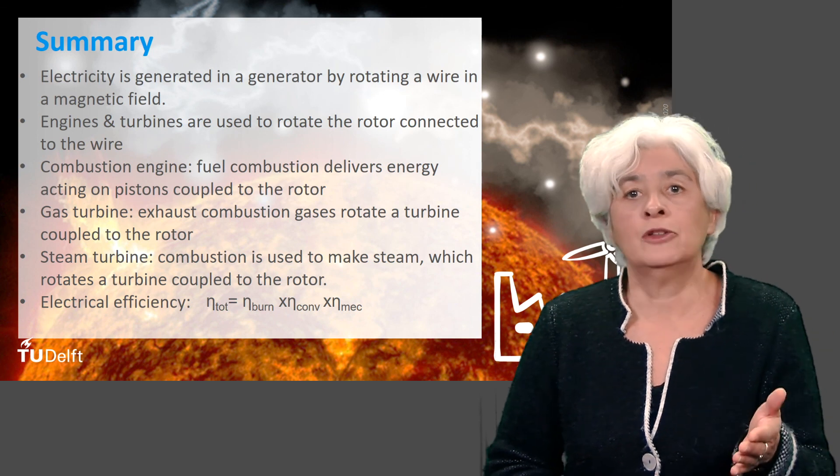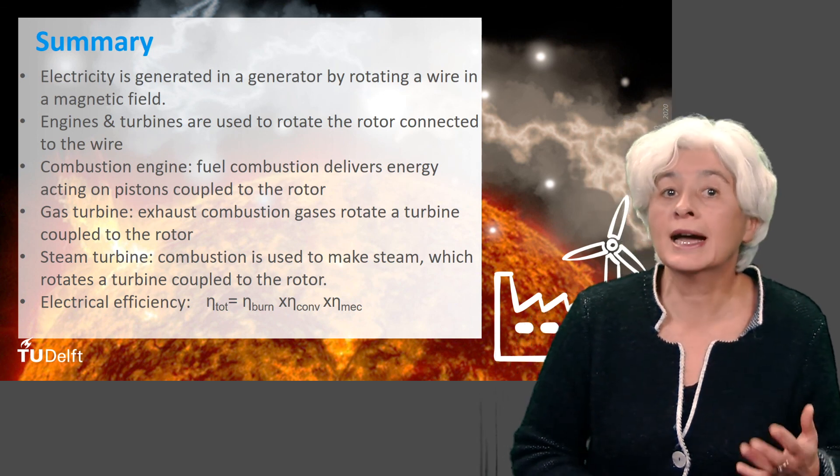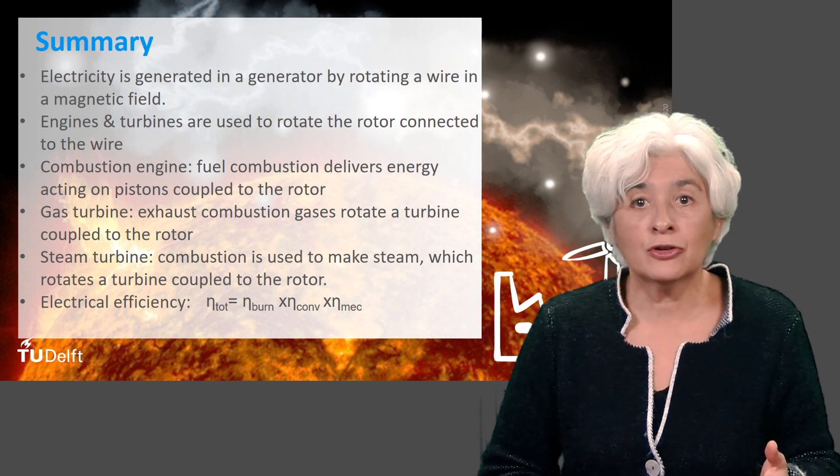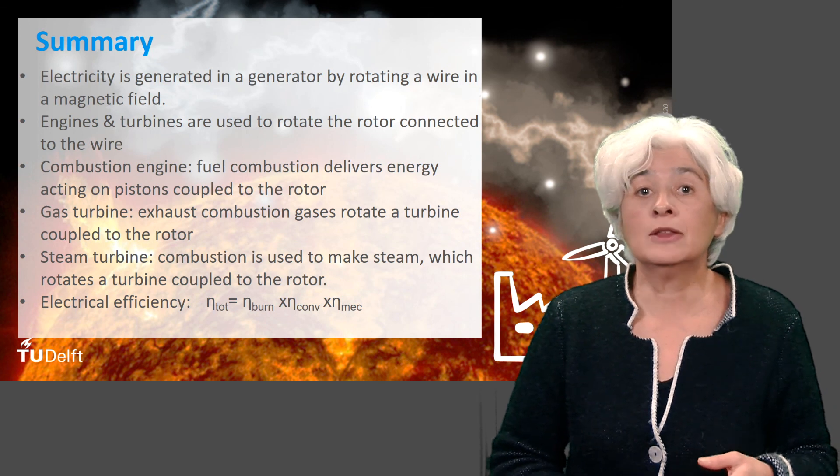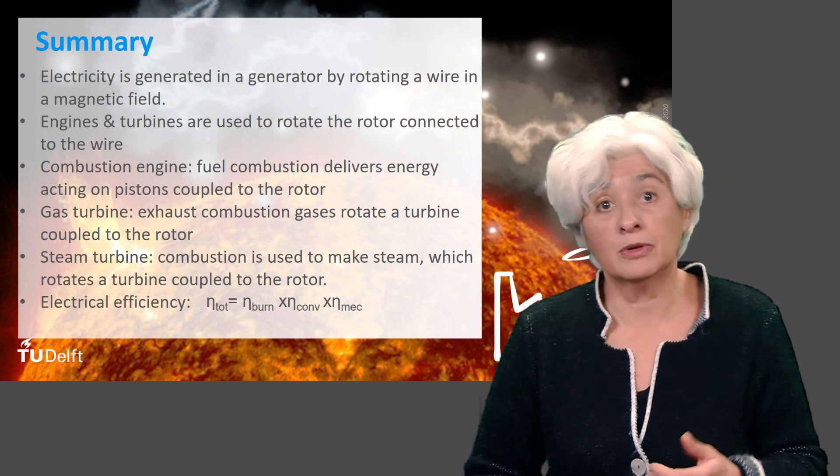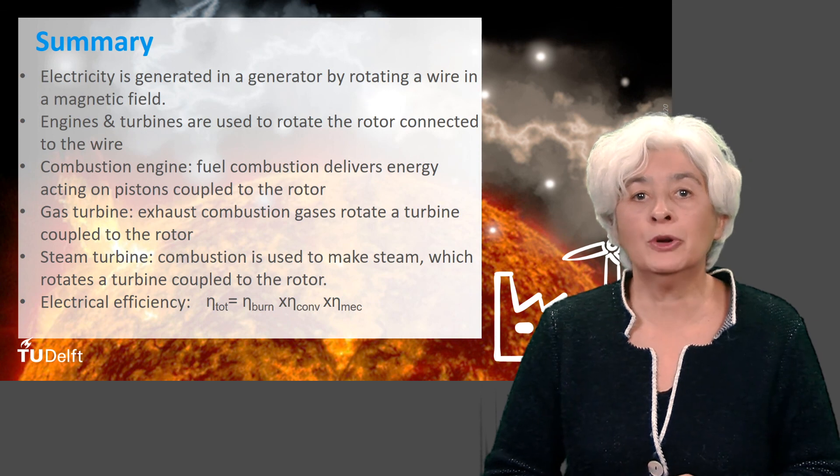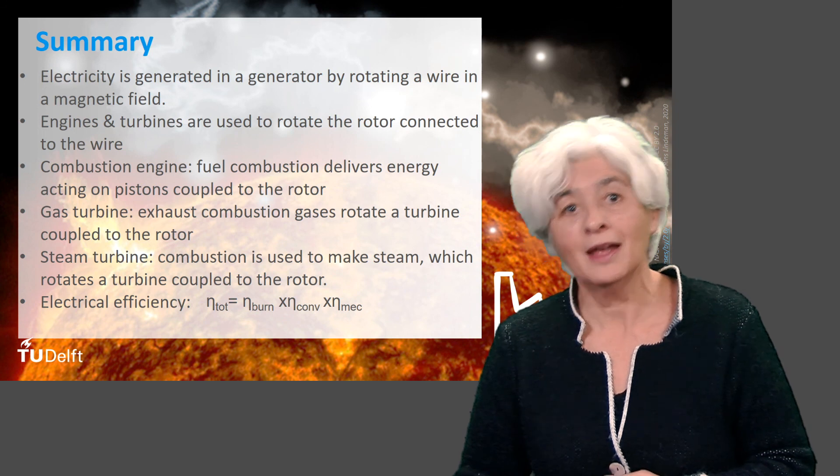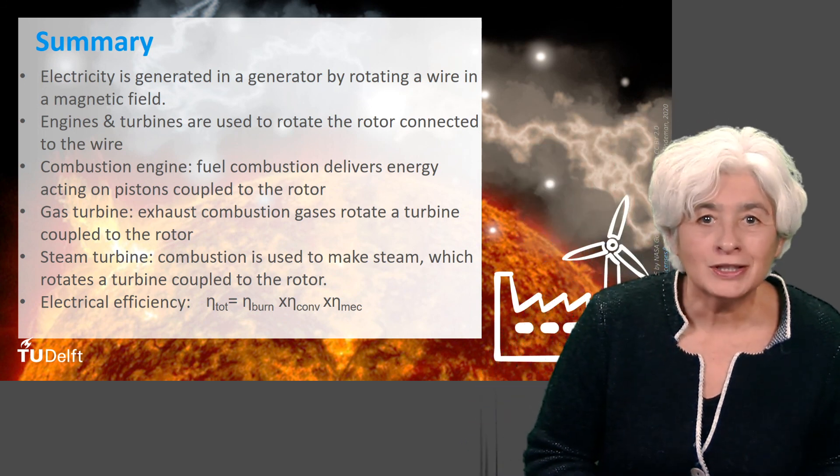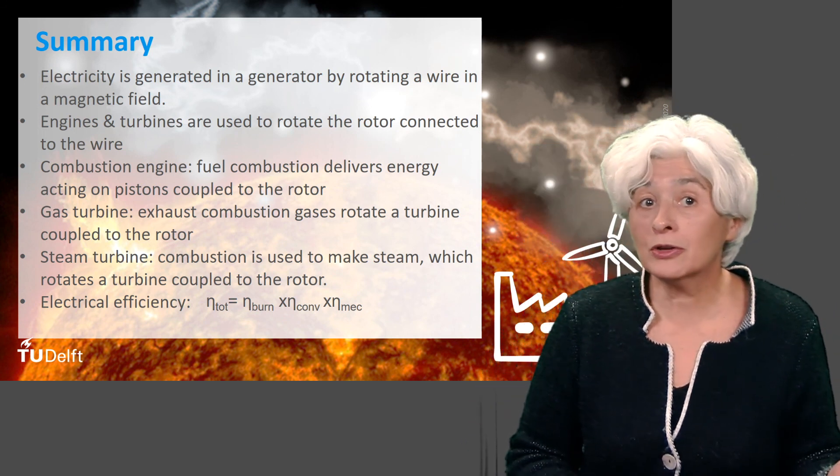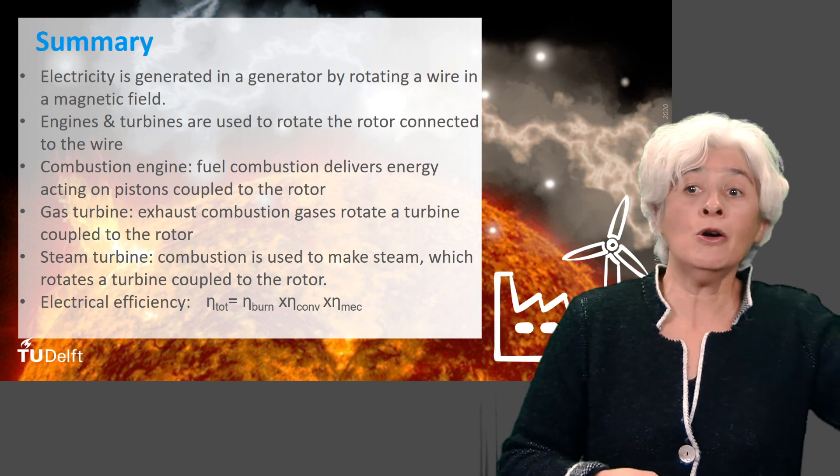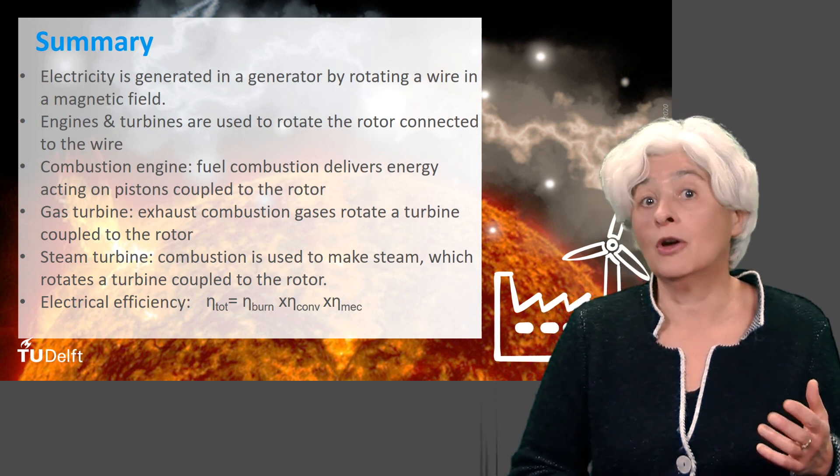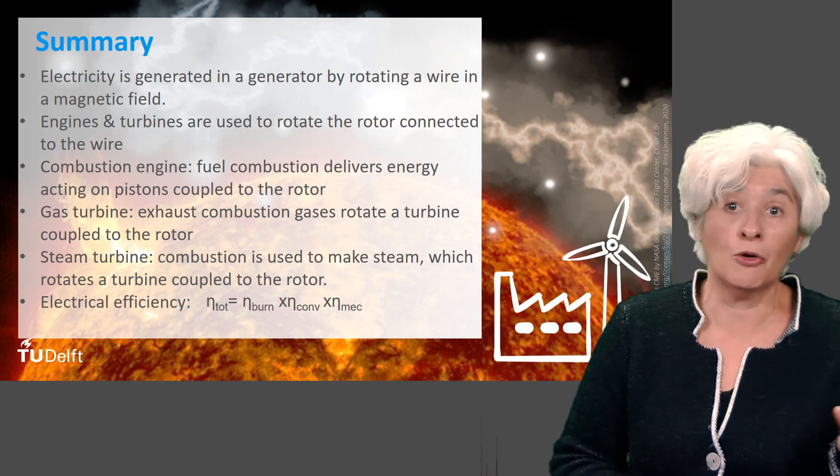In a combustion engine, fuel combustion delivers energy acting on the pistons coupled to the rotor. In a gas turbine, the exhaust combustion gases rotate a turbine coupled to the rotor. And finally, in a steam turbine, combustion is used to make steam, which rotates a turbine coupled to the rotor. The total efficiency of electricity production is the product of the efficiencies of all these sub-processes. The combustion process itself is quite efficient, around 0.9 or above.